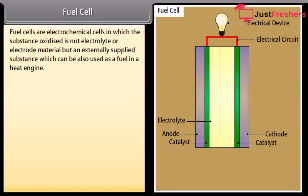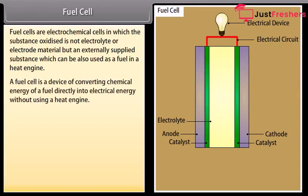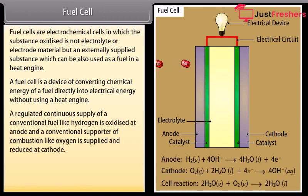Fuel cell. Fuel cells are electrochemical cells in which the substance oxidized is not electrolyte or electrode material but an externally supplied substance which can also be used as a fuel in a heat engine. A fuel cell is a device of converting chemical energy of a fuel directly into electrical energy without using a heat engine.